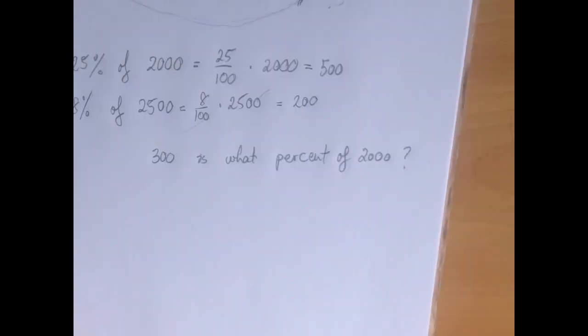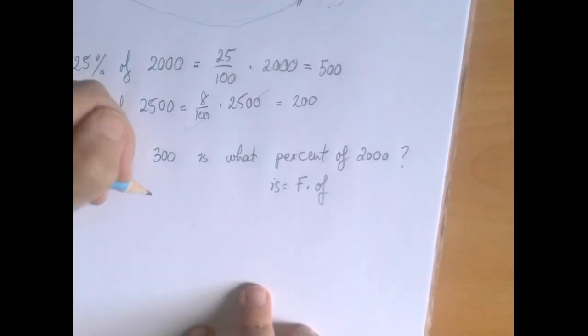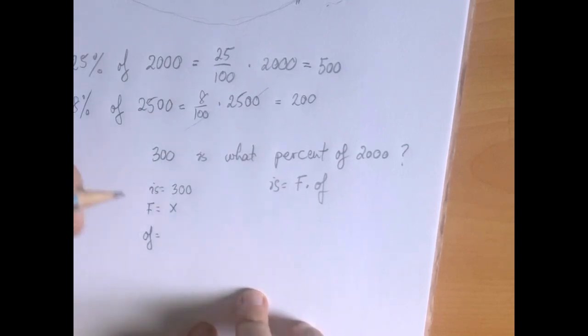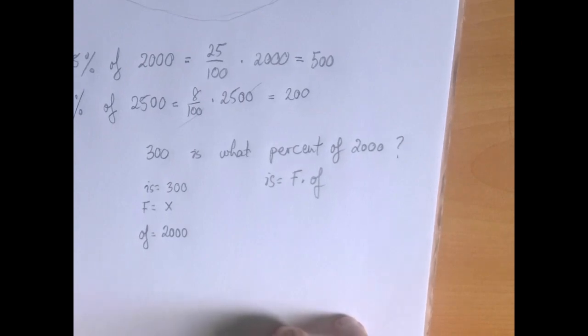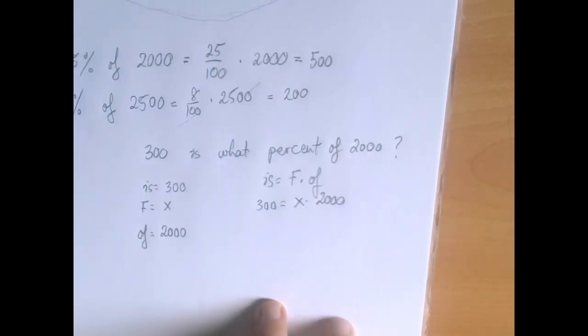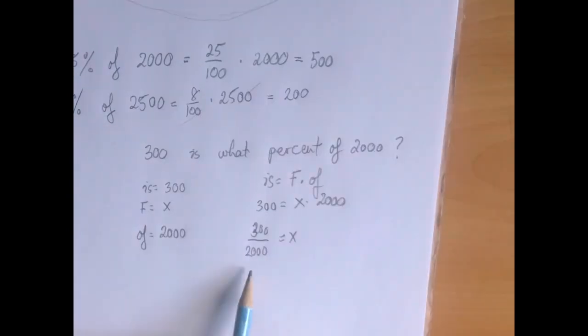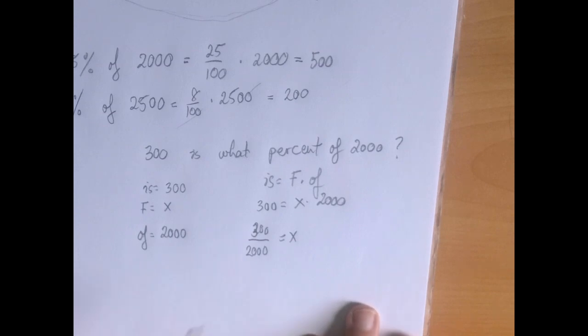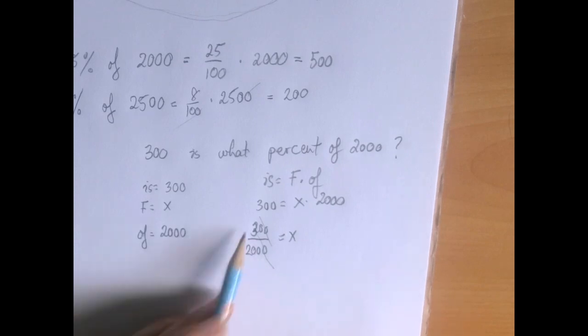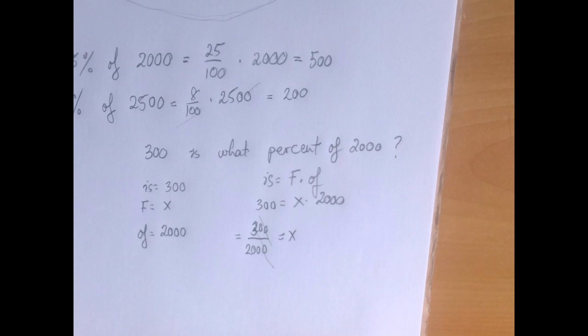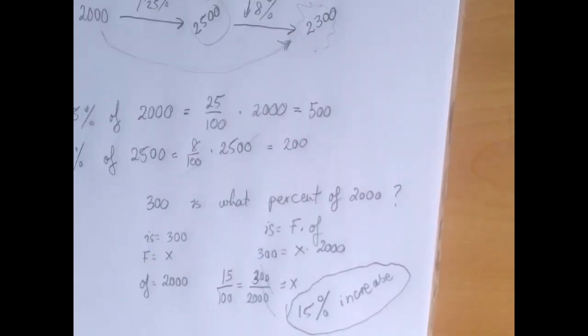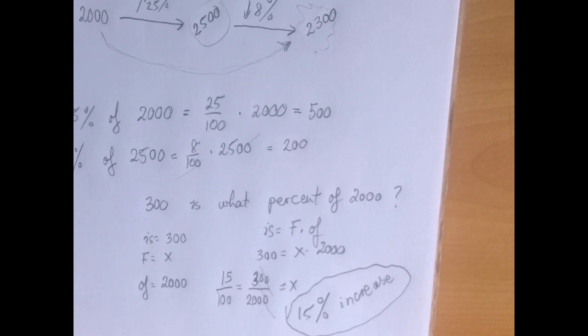So we're going to be able to answer the question if we just answer this change, 300 is what percent of 2,000? So this is a very basic type 2 question. Is fraction times of. In this case, clearly 300 is the is number. The fraction is asked in percent form, and the of number is 2,000. Is equals fraction times of becomes 300 equals x times 2,000. We're going to solve for x by dividing both sides by 2,000. And we should try to get this fraction to a denominator of 100, which doesn't seem to be difficult. We have 30 over 200, so if we divide upstairs and downstairs by 2, we get 15 over 100, and that's 15%. So the two changes, 25 up and 8 down, combine into a 15% increase.